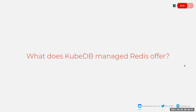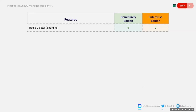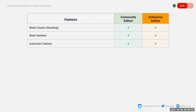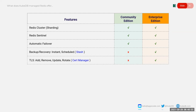Let's take a look at what KubeDB offers. We have support for clustering — sharding cluster — and also support for Redis Sentinel, which is included in our latest release. In both cases we have support for automatic failover. We have support for backup and restore with Stash, which is an enterprise feature ensuring your data is backed up properly so you can recover in case of any disaster. There is also support for rotating or updating TLS certificates on the server side.